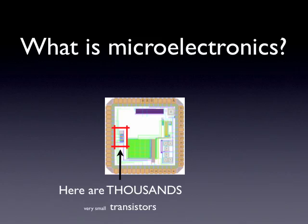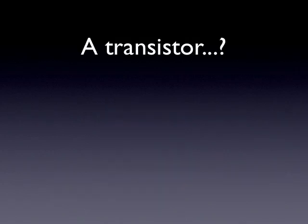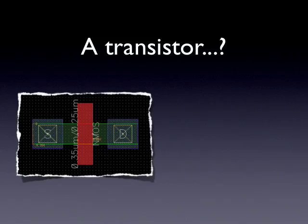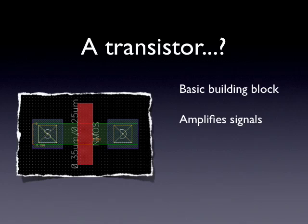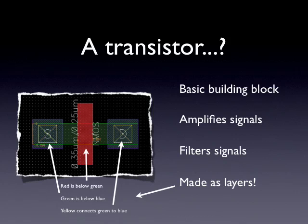So we have a new word here: a transistor. What is it? Well, it looks like this. It is the basic and most fundamental building block in microelectronics. With this, we can amplify signals — for example, cranking up the volume of your audio amplifier. We are also able to filter signals with this. And we make this as layers. It's really simple, actually. This picture consists of one transistor and three layers.